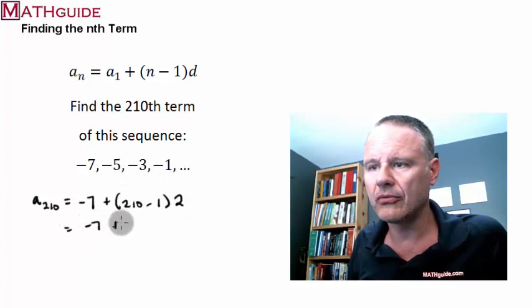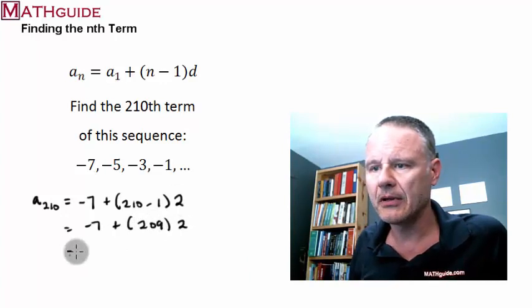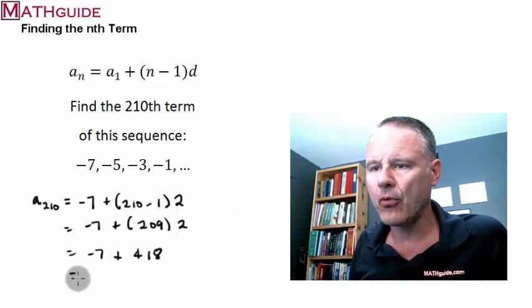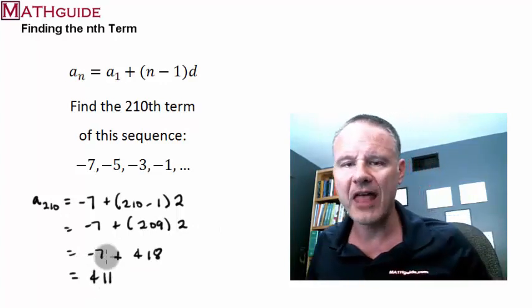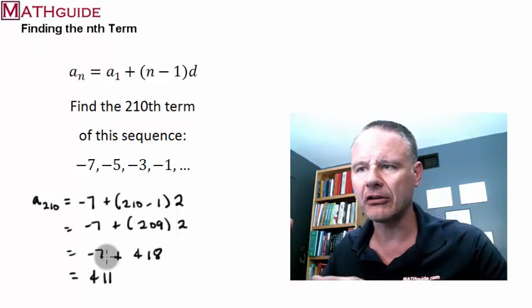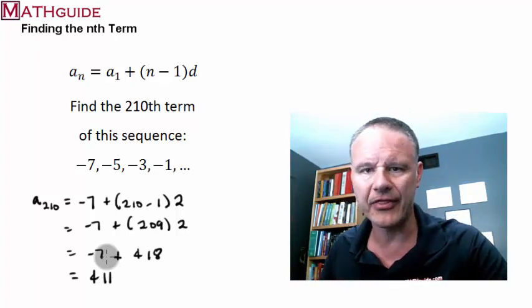So, it really means we're going to take 209 times 2. Let's see. What would that be? That would be 418. 418 plus negative 7 is 411. And there you go. That's how we find any particular term, which we call the nth term.